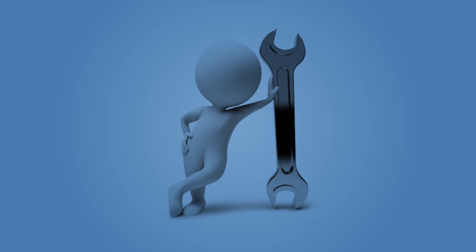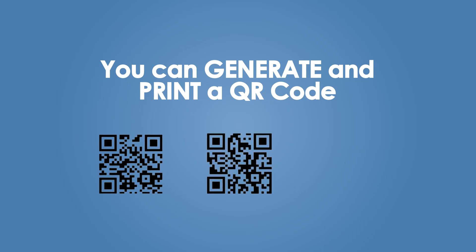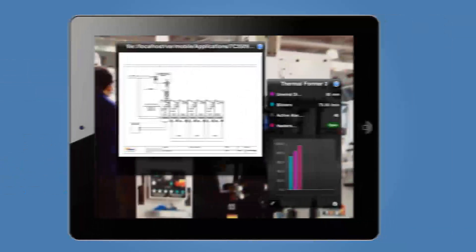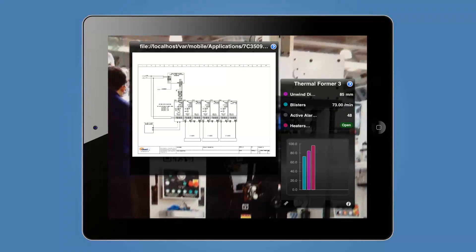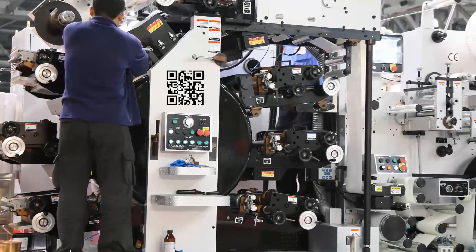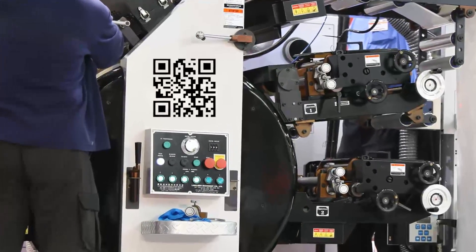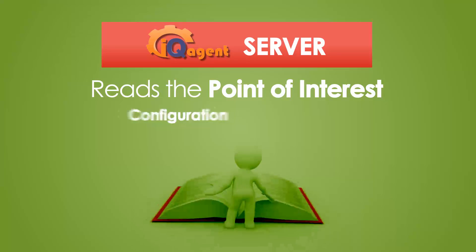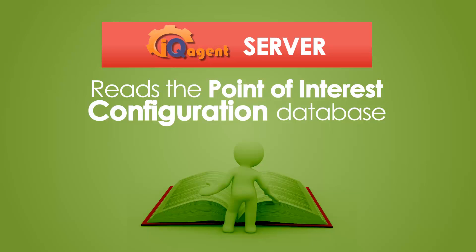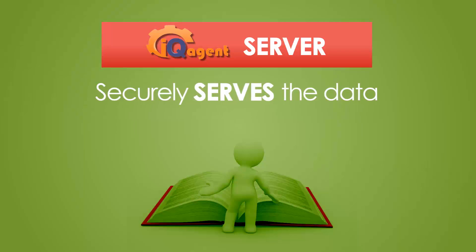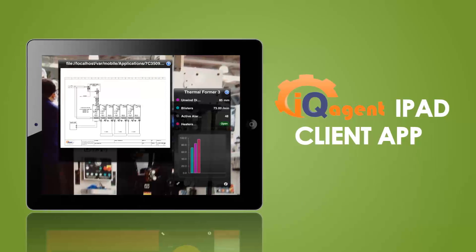Once you've configured all your points of interest, you can generate and print a QR code for each that will act as a link to the point of interest for the IQ Agent iPad app. You place these QR codes on the plant floor near the actual equipment or process the point of interest represents. The IQ Agent Server reads the point of interest configuration database and securely serves the data to the IQ Agent iPad Client App on demand.